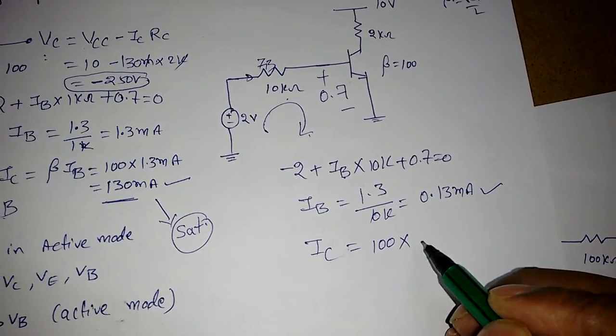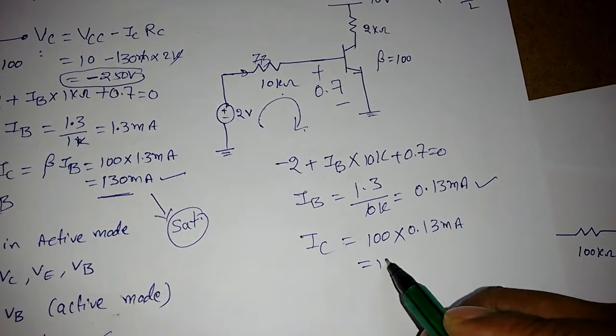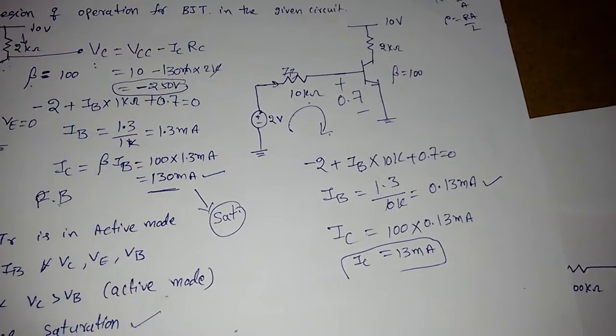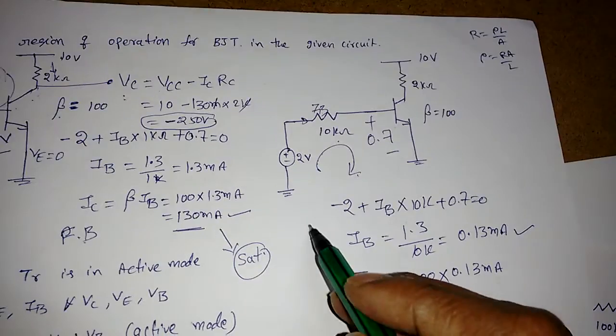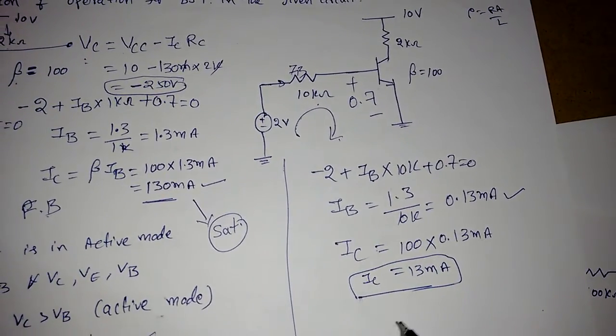IC will become 13 mA. Now if it is more than 10 mA, I can say it is in saturation region, but anyway we will find the voltages.